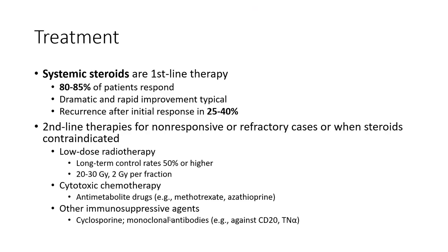Treatment includes systemic steroids as first-line therapy, with 80 to 85 percent of patients showing dramatic and rapid improvement. Recurrence after initial response occurs in 25 to 40 percent. Second-line therapy for non-responsive or recurrent cases, or when steroids are contraindicated, includes radiotherapy and cytotoxic chemotherapy.